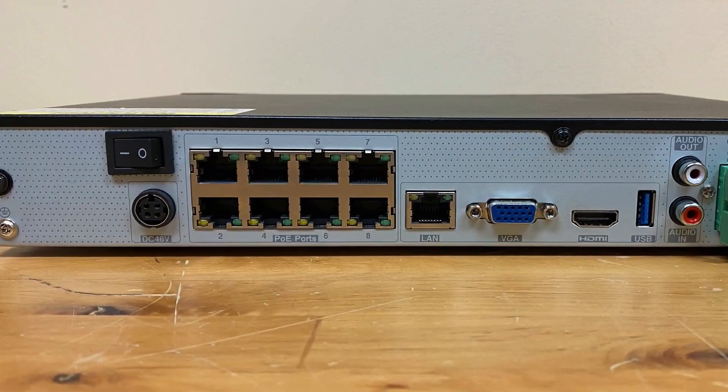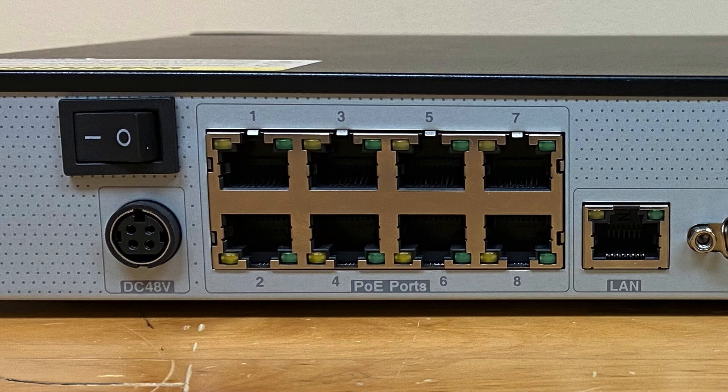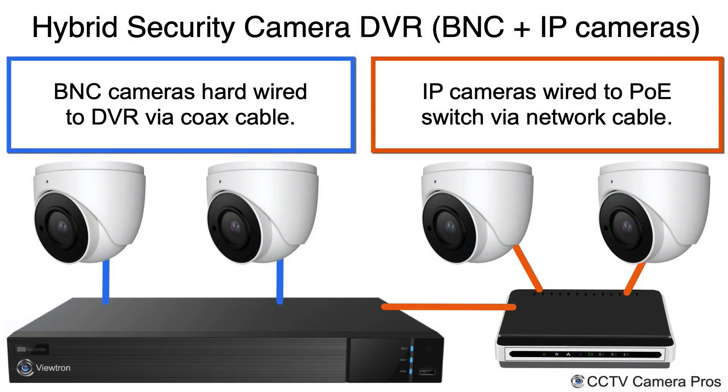Another reason to go with an NVR is if you already have Cat5 or Cat6 network cable run to your camera locations and you're used to using IP cameras — just go with the NVR. The NVR has built-in Power over Ethernet, so the cameras run right back to the ports on the back of the recorder, which provide both power and connectivity. With the hybrid DVR, you have to use a separate PoE network switch for the IP cameras, which connects to the same network as the DVR — a logistical and network topology difference between the two.